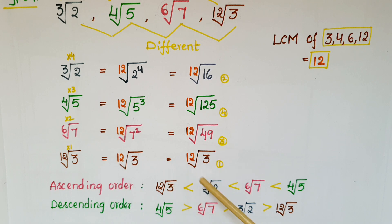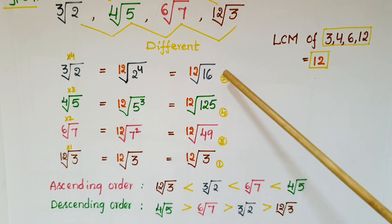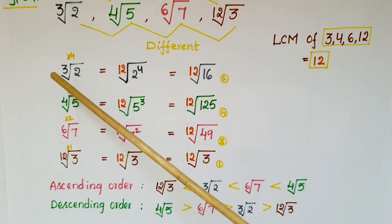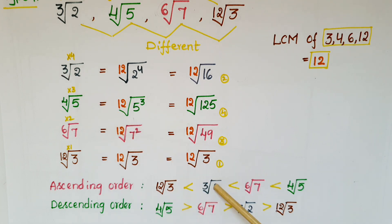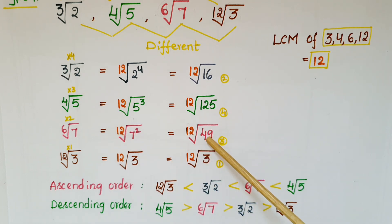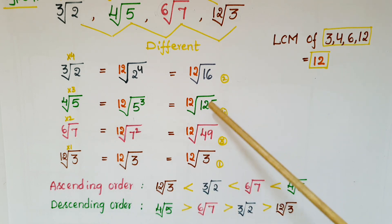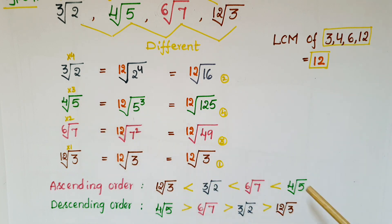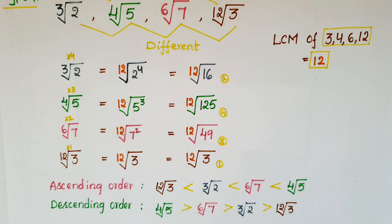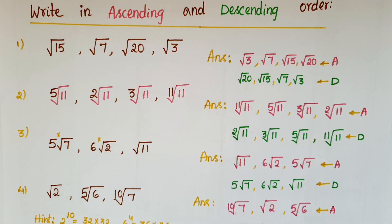Third is 12th root of 49, and fourth is 12th root of 125. Now write the corresponding original numbers in ascending order: smallest is 12th root of 3, corresponding to 12th root of 3; next is 12th root of 16, corresponding to cube root of 2; then 12th root of 49, corresponding to sixth root of 7; and largest is 12th root of 125, corresponding to fourth root of 5. This is the ascending order; write in reverse for descending order.